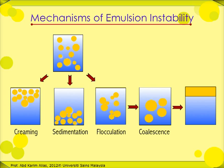Flocculation could lead to coalescence. Coalescence involves breaking the interfacial film and is irreversible. Various factors such as solubility of the emulsifier, pH, salts, emulsifier concentration, phase volume ratio, temperature, and properties of the film affect coalescence stability of the emulsion.